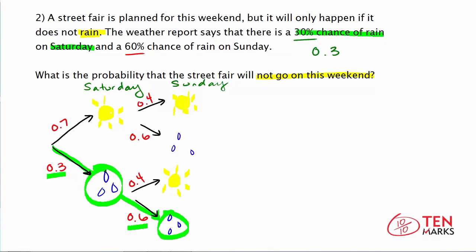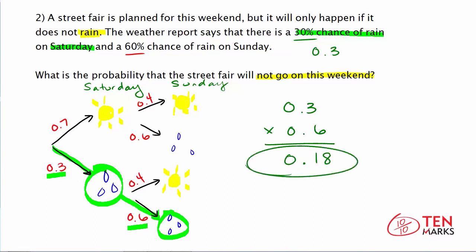To find the compound probability, you're going to use multiplication — multiply 0.3 times 0.6. Because there are two digits after the decimal place in total, we'll have two digits after the decimal in our product. 6 times 3 is 18, so the compound probability of it raining on both Saturday and Sunday is 0.18. Converting to a percentage, it's 18% likely that the fair will not go on this weekend — which actually isn't so bad, because if there's only an 18% chance it won't happen, it's pretty likely it will. In this lesson, you've learned about compound probability. Thanks for watching.